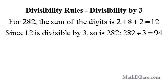If the sum of the digits of a whole number is divisible by 3, then the number is divisible by 3. For example, in the number 282, the sum of the digits is 2 plus 8 plus 2, or 12. Since 12 is divisible by 3, 282 is divisible by 3, and 282 divided by 3 equals 94.